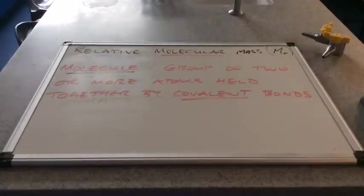We'll start with relative molecular mass or MR for short and obviously the key to this is we need to know what a molecule is. So there's the definition of a molecule: a group of two or more atoms held together by covalent bonds.